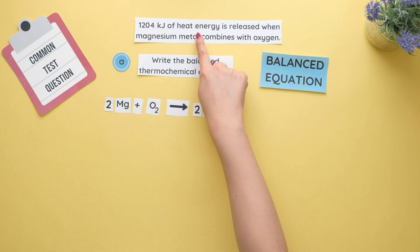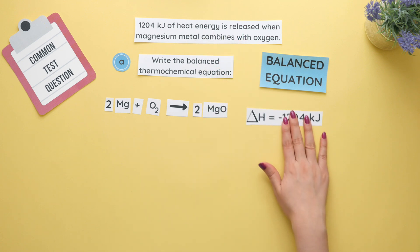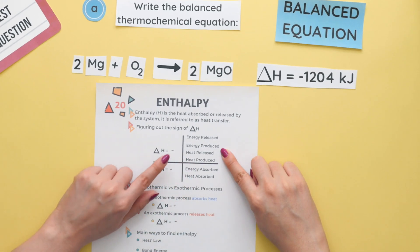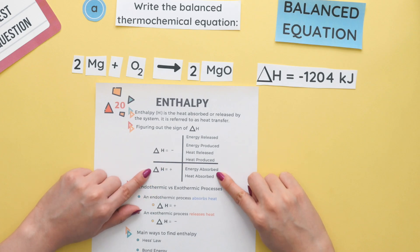This question also states heat energy is released meaning our enthalpy change is released which means it's negative. Note if heat or energy is released then our enthalpy change is negative. If heat or energy is absorbed then our enthalpy change is positive.